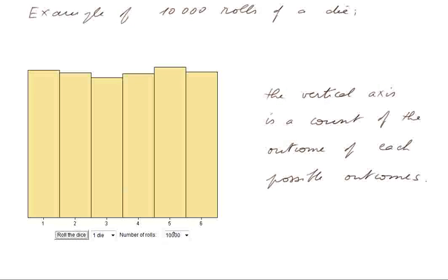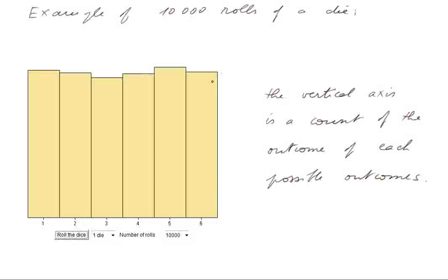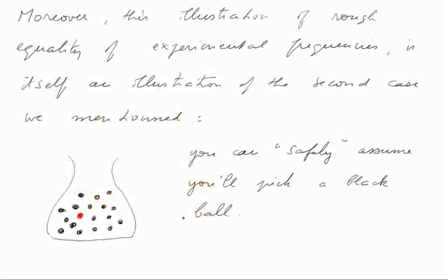Moreover, such a practical equivalence of the frequencies — that is, the equivalence of the experimental frequency — is itself an illustration of the second case we mentioned. Remember, in an urn you have plenty of black balls and one red ball. If you pick at random, shake the urn, plunge your hand in without looking, and pick one ball at random, you can safely assume you'll pick a black ball. Let's explain why.